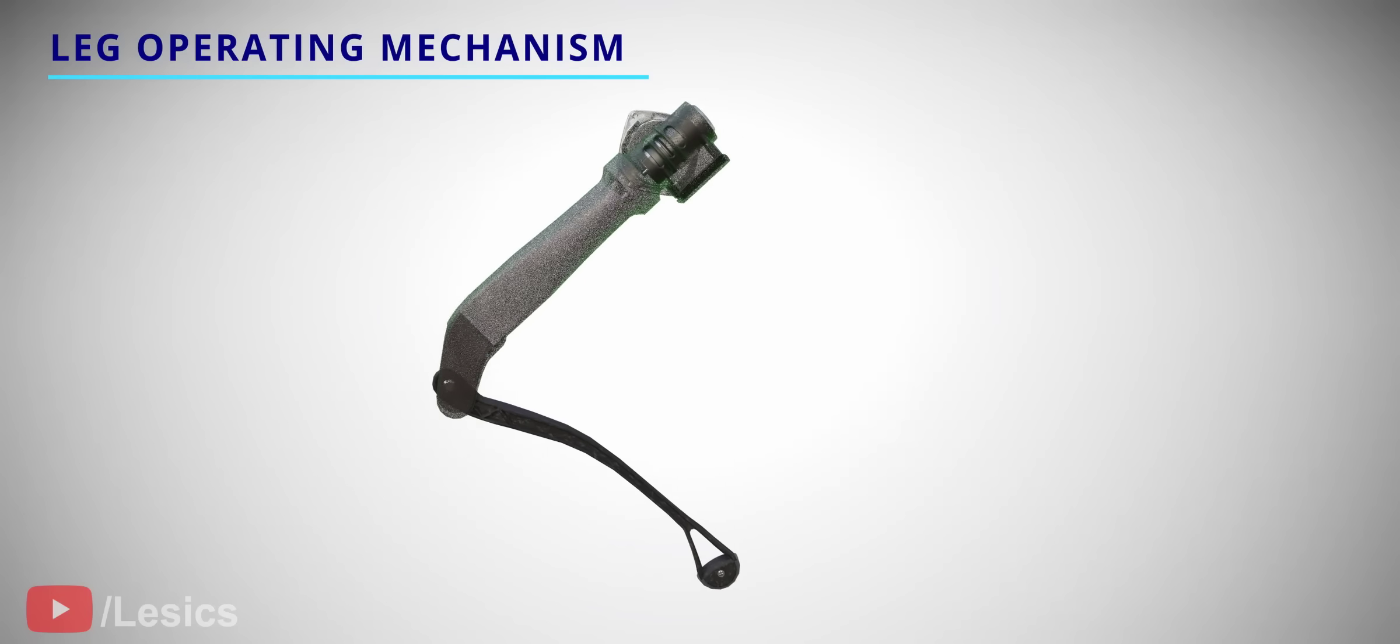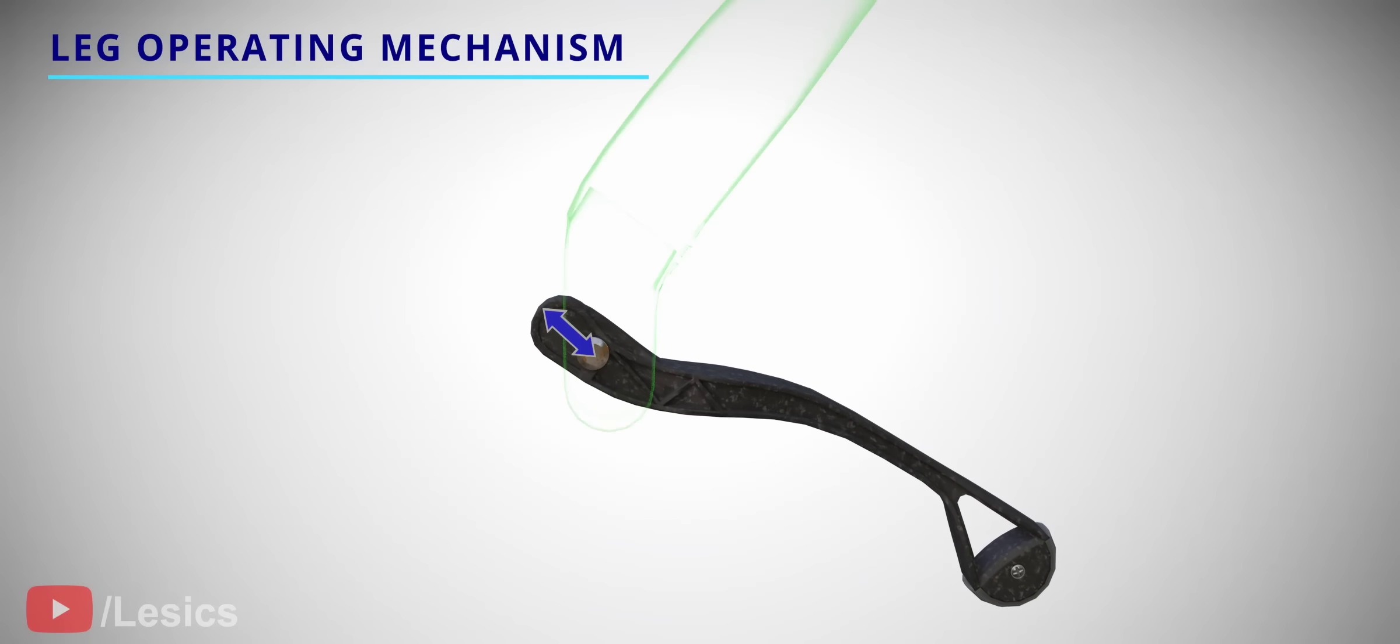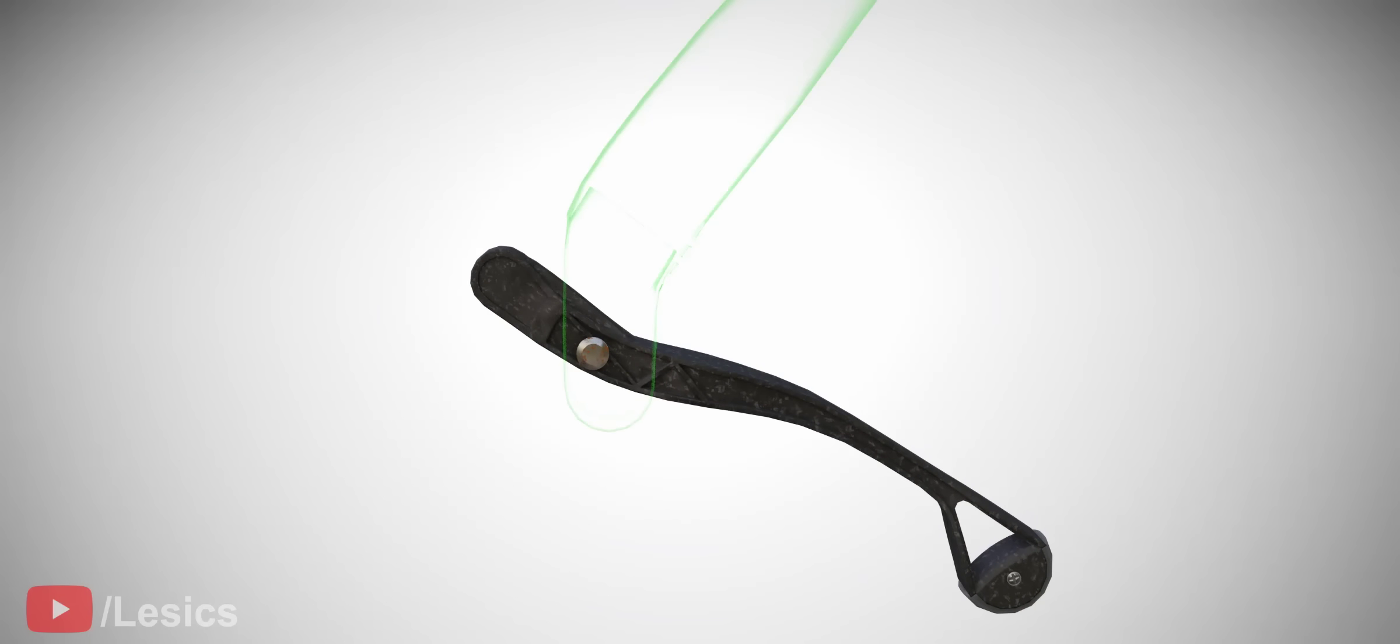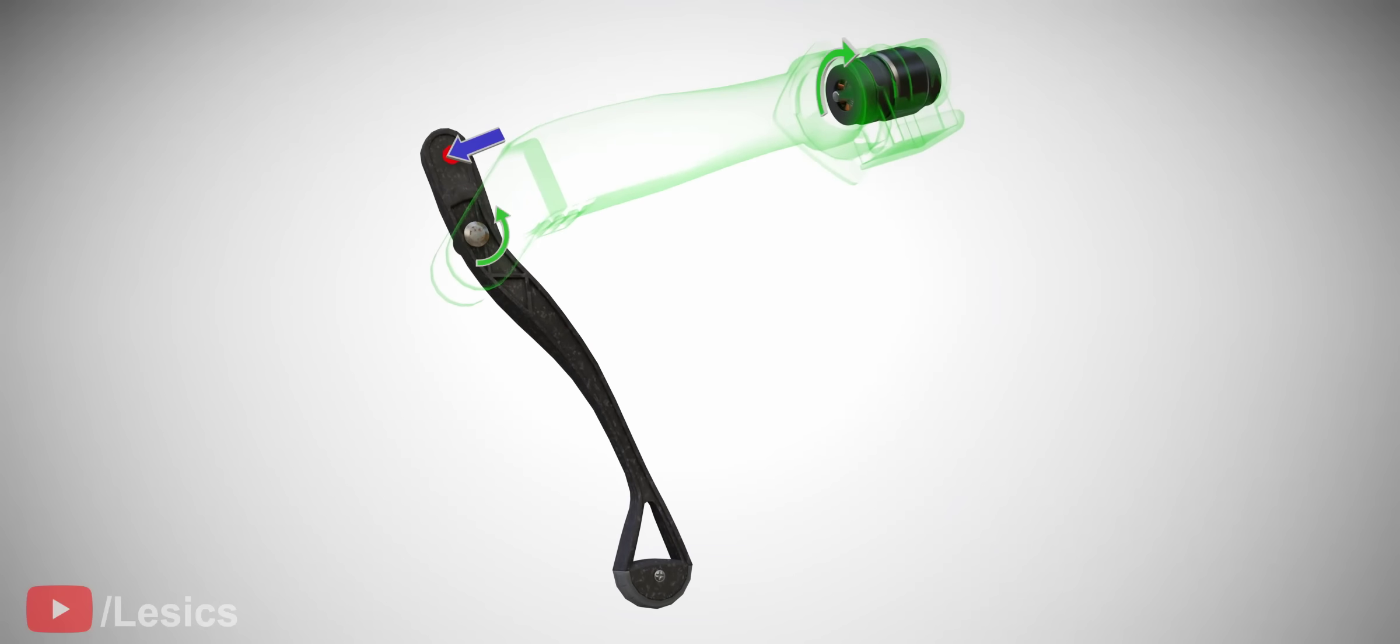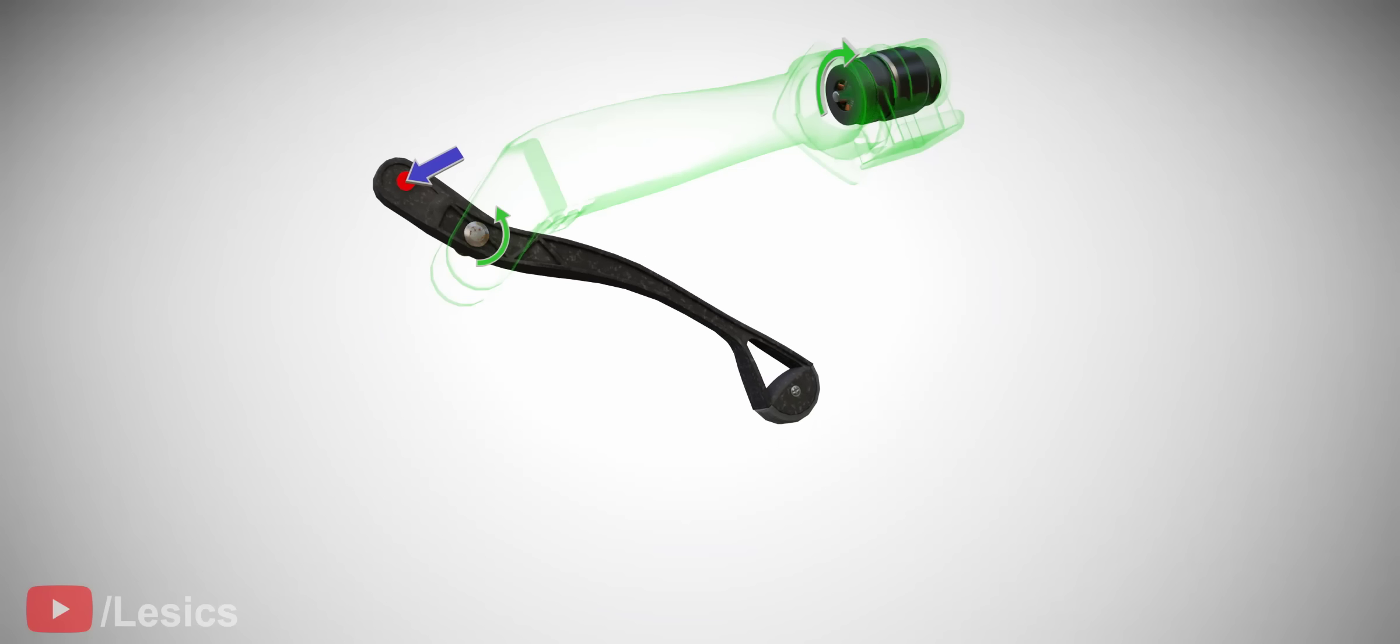Now, let's get into the mechanism that the Boston Dynamics engineers came up with to operate the knee joint. To achieve this mechanism, they first extended the lower limb behind the knee joint. Now, if the motor can give a linear motion to the tip of the lower limb, it will obviously rotate.